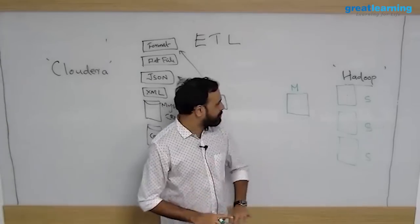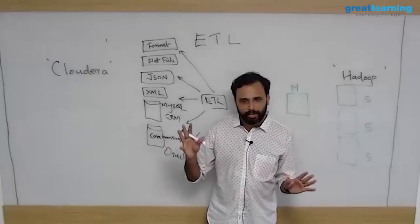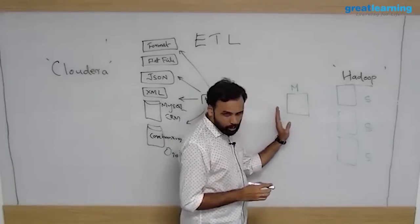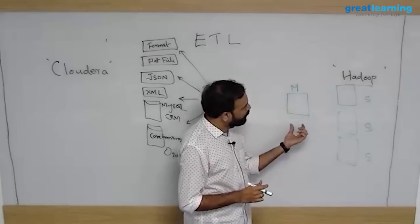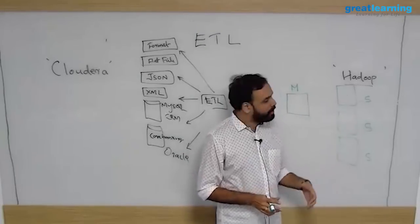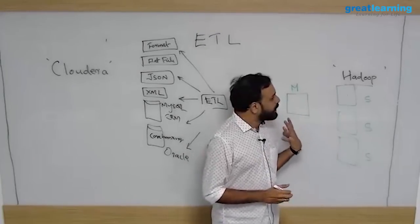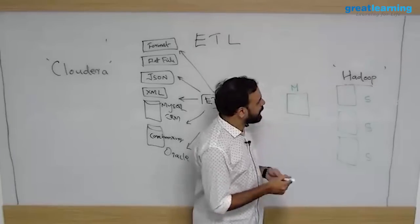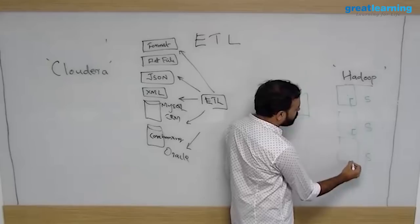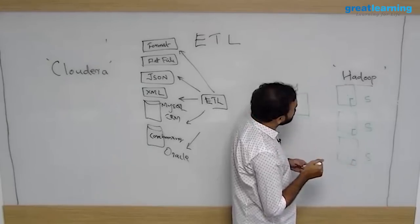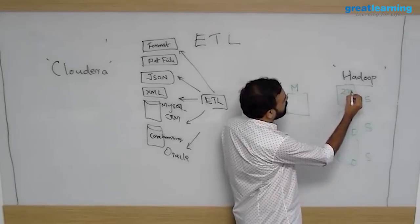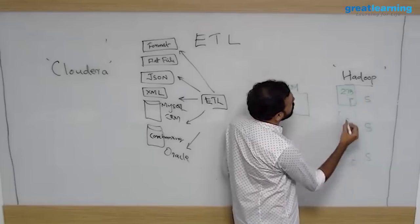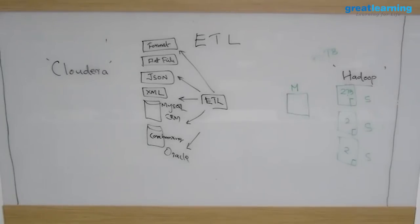We haven't discussed what the master and slave are doing — that's for later. But when you install Hadoop with one master and three slaves, the idea is that Hadoop will help you store data among those three boxes. You can use the storage space of all three boxes, so if each has a two-terabyte hard disk, you get a total capacity of six terabytes.